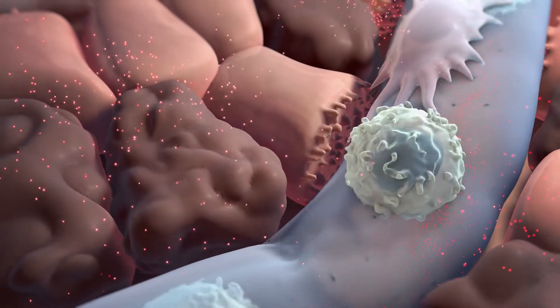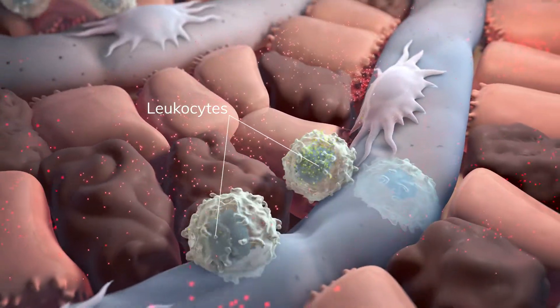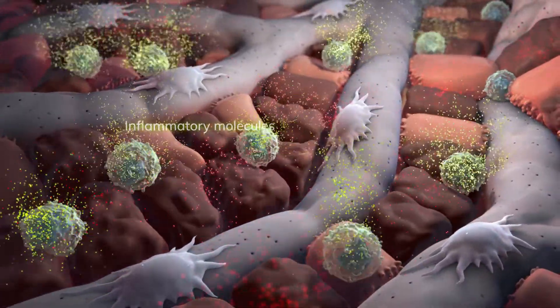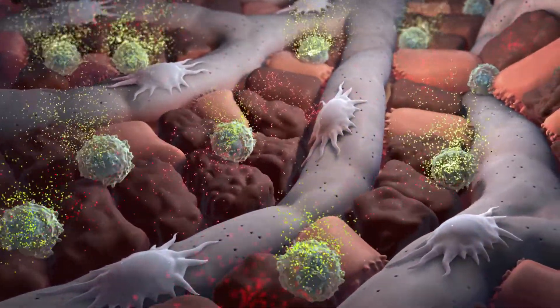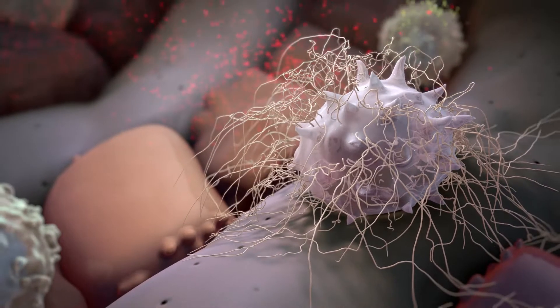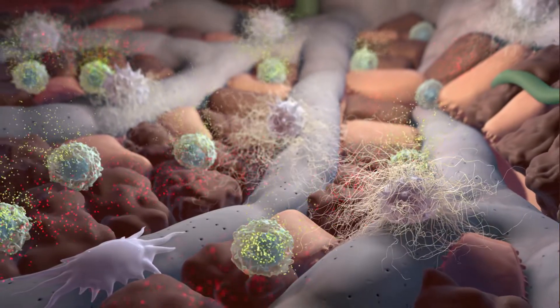These molecules attract and activate leukocytes and certain liver cells to release more inflammatory molecules leading to further cellular damage. This activates hepatic stellate cells causing them to secrete molecules that form a harmful fibrotic scar.